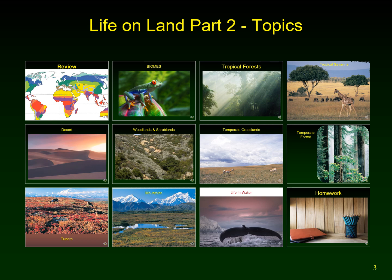We'll start with a quick review of Part 1, then go over each of the following biomes: tropical forests, tropical savannas, deserts, woodlands and shrublands (also known as the chaparral and Mediterranean woodland), temperate grasslands, temperate forests, the tundra, and the mountaintops. Then I'll touch on how biomes or different ecosystems are structured in water — Chapter 3 covers life in water, so I'll just quickly review that — and then the homework section.